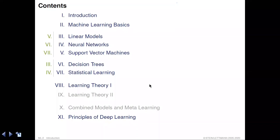The groups that you see here — linear models, neural networks, and support vector machines — belong somehow together. Decision trees and statistical learning is a completely different thing, and hence we have separated this a bit.